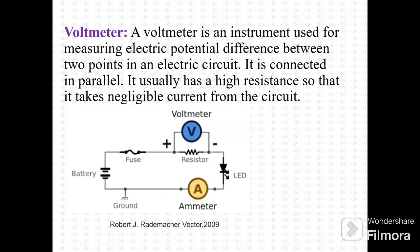The next device is a voltmeter. See this circuit diagram. Here a battery, fuses, and a resistor are there. The voltmeter is connected in parallel with this resistor, LED, ammeter, and ground. The voltmeter is always connected in parallel. It measures electric potential difference between two points of that electric circuit.